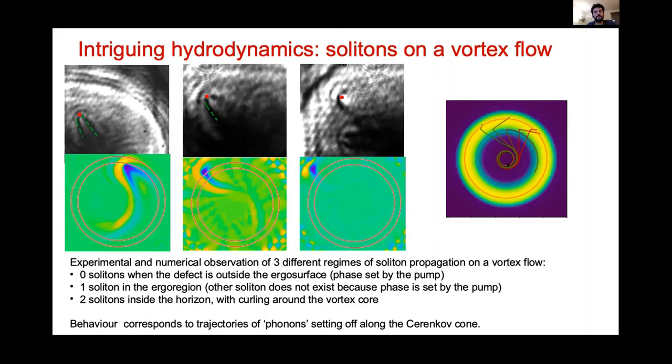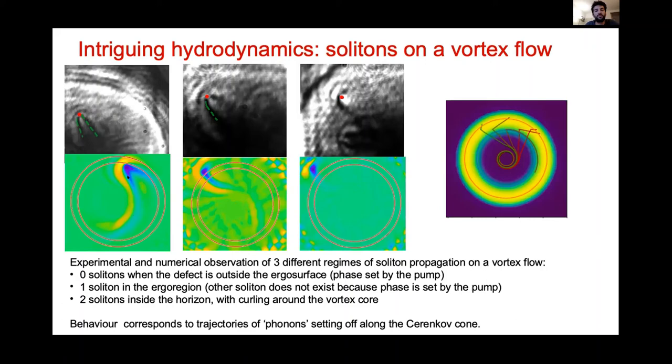Here is a comparison between the intriguing hydrodynamics with two, one, and zero soliton regimes, and the corresponding simulations. The analytical calculation captures the nice curling behavior. What we learn is that the behavior of our solitons corresponds to trajectories of phonons set off along the Cherenkov cone — this description suffices to capture the physics. The zero, one, two soliton behavior is explained by the distance to the high-density pump: close to the pump, the pump sets the phase and prevents a π phase shift; further away, a π phase shift is possible.